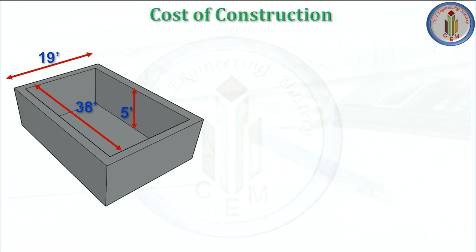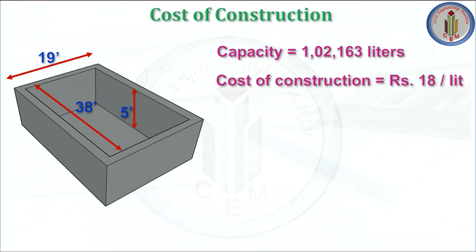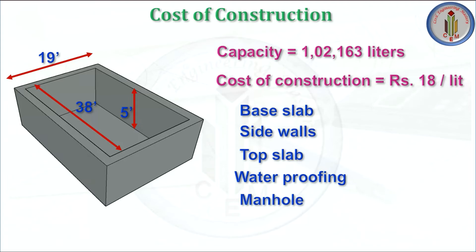Next, the cost of construction. The actual capacity of the tank is 1,02,163 liters. The cost of construction is approximately ₹18 per liter, which may vary from ₹18 to ₹20 per liter depending on your location, material cost, and labor cost. This cost includes base slab, side walls, top slab, waterproofing, manhole, all materials, and labor charges.